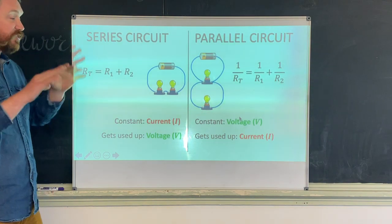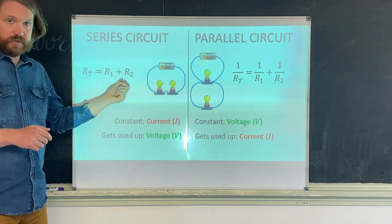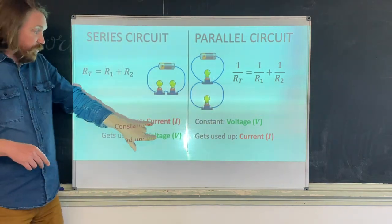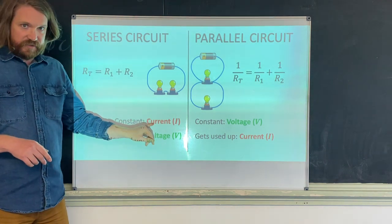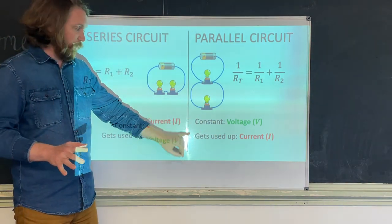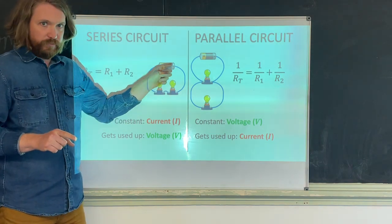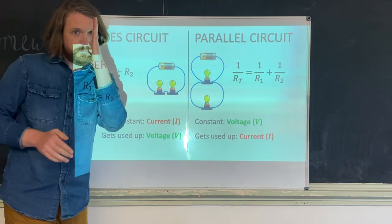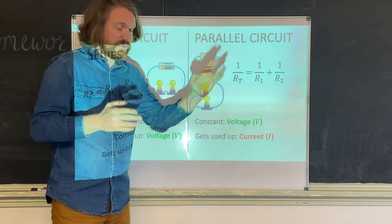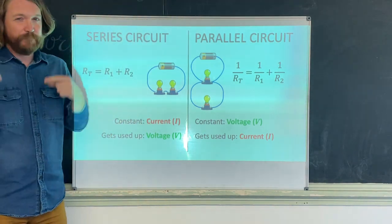Comparing the two: in a series circuit, total resistance is just the sum of all resistors. In a parallel circuit, you add their reciprocals. In a series circuit, current is constant everywhere and voltages add up to the total. In a parallel circuit, the voltage is constant everywhere and current adds up to a total. A memory trick: series is one loop — I (current) is constant. Parallel splits into many loops — V (voltage) is constant.